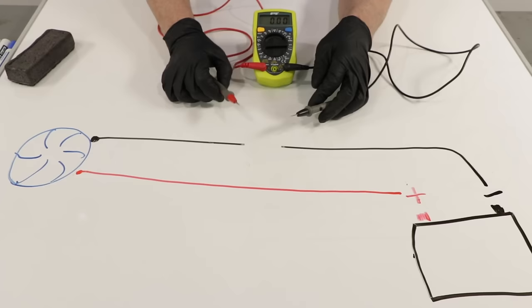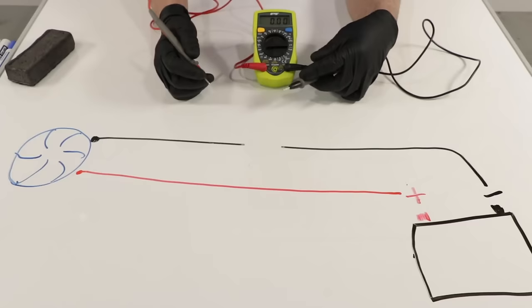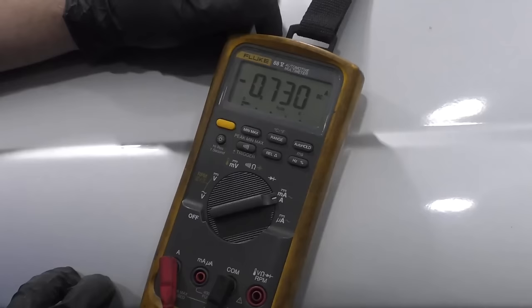You could also do a parasitic draw test on this, where you hook this between your car's negative battery cable and the battery, and with the vehicle off, see if the vehicle is pulling too many amps, and that's causing your battery to die.